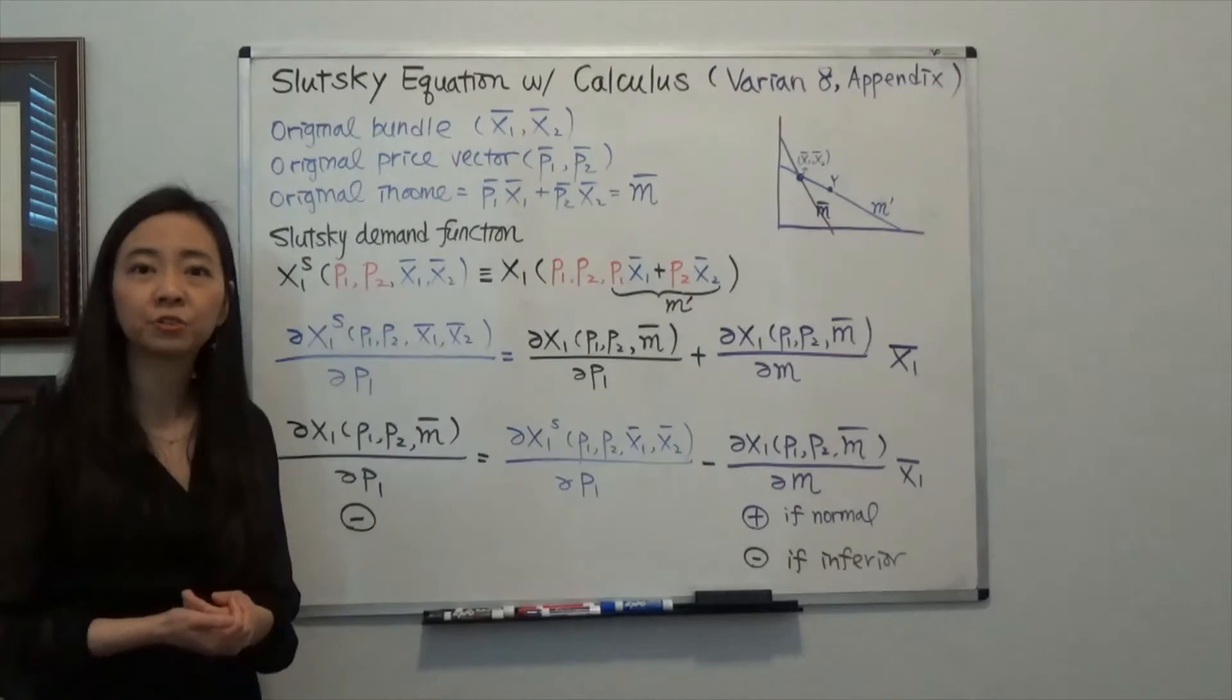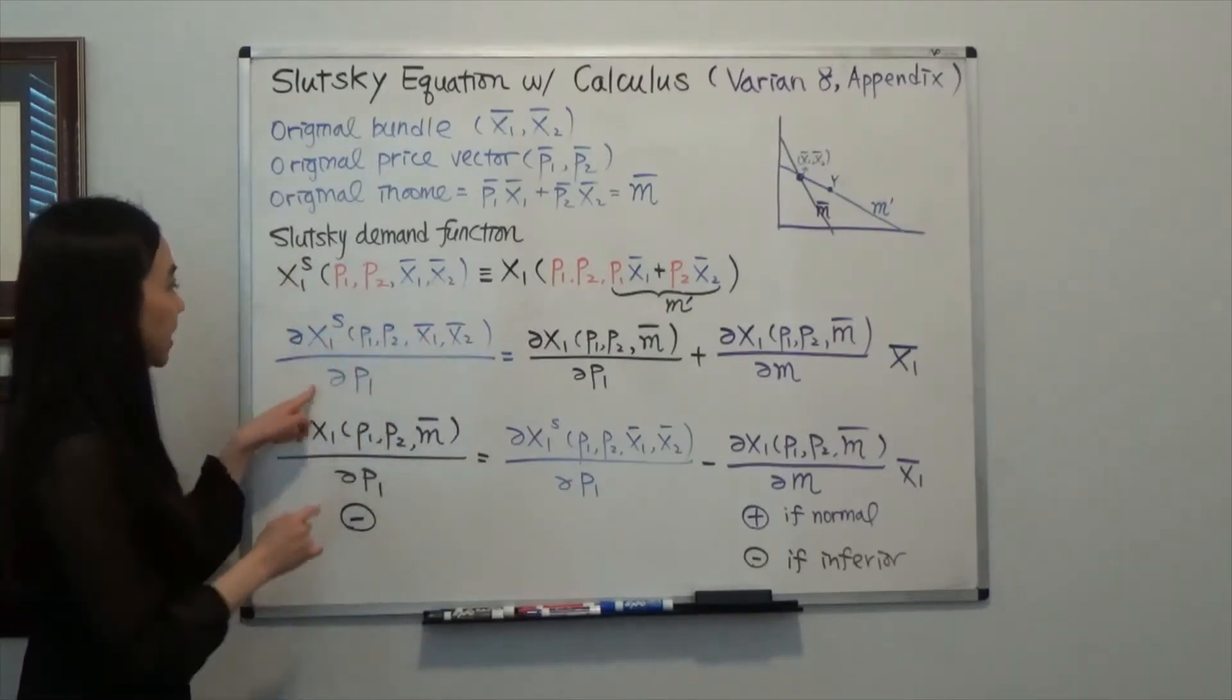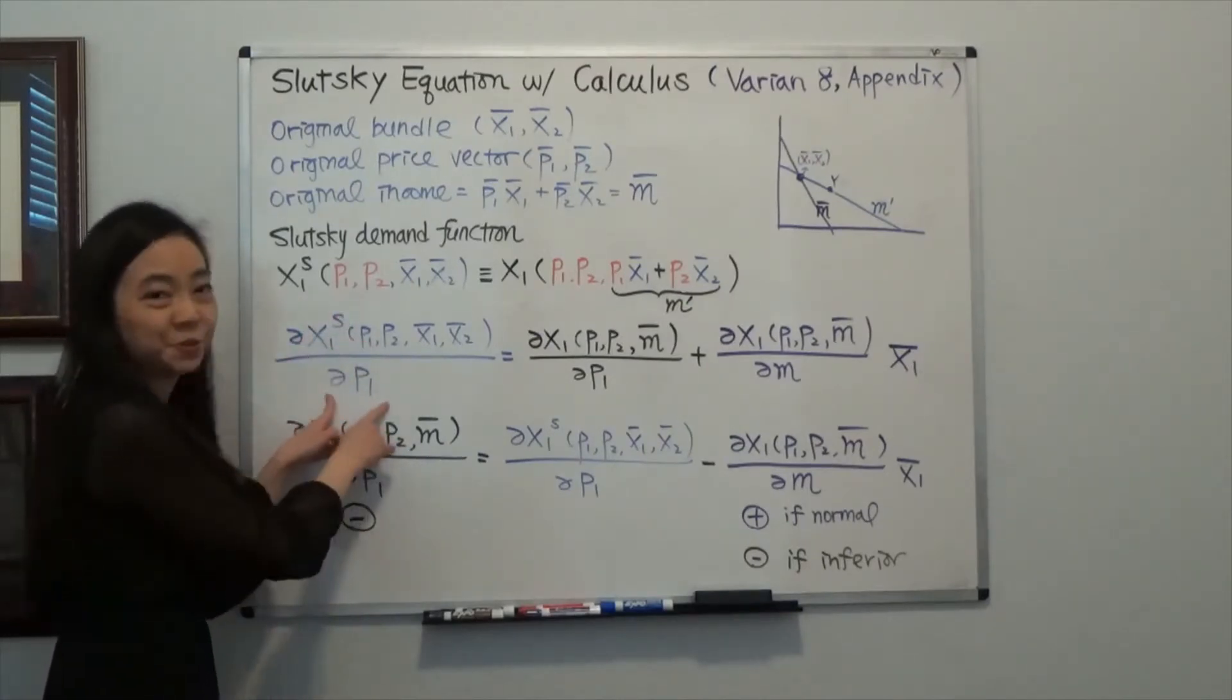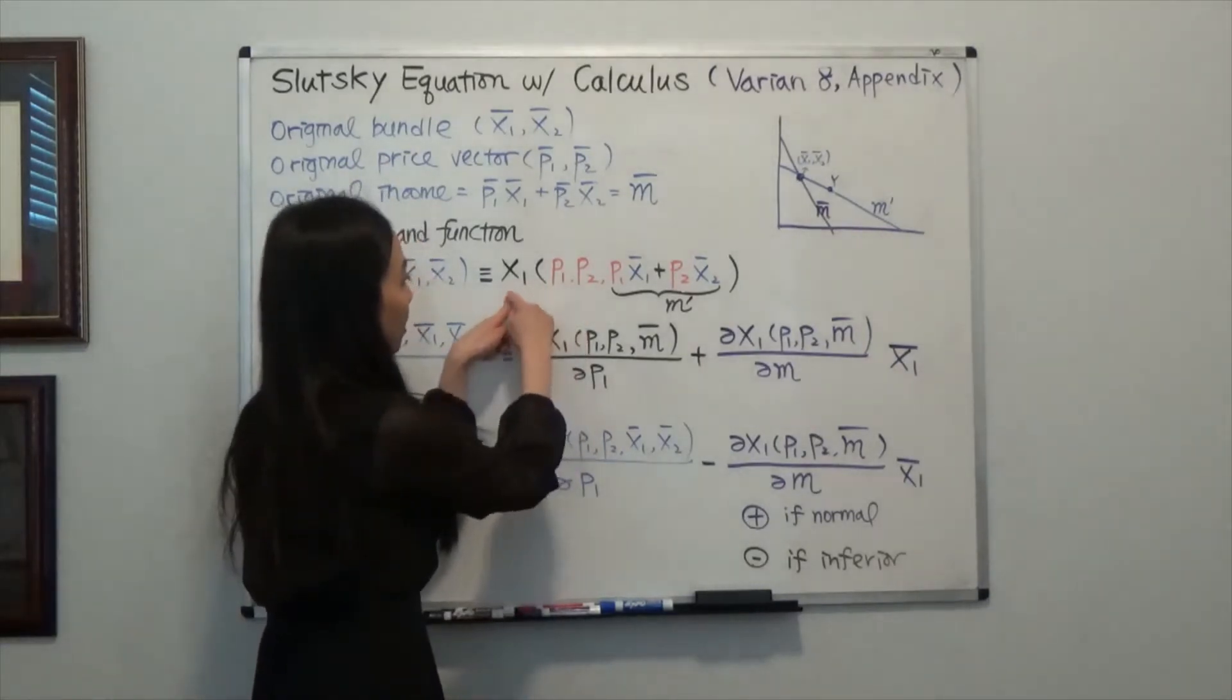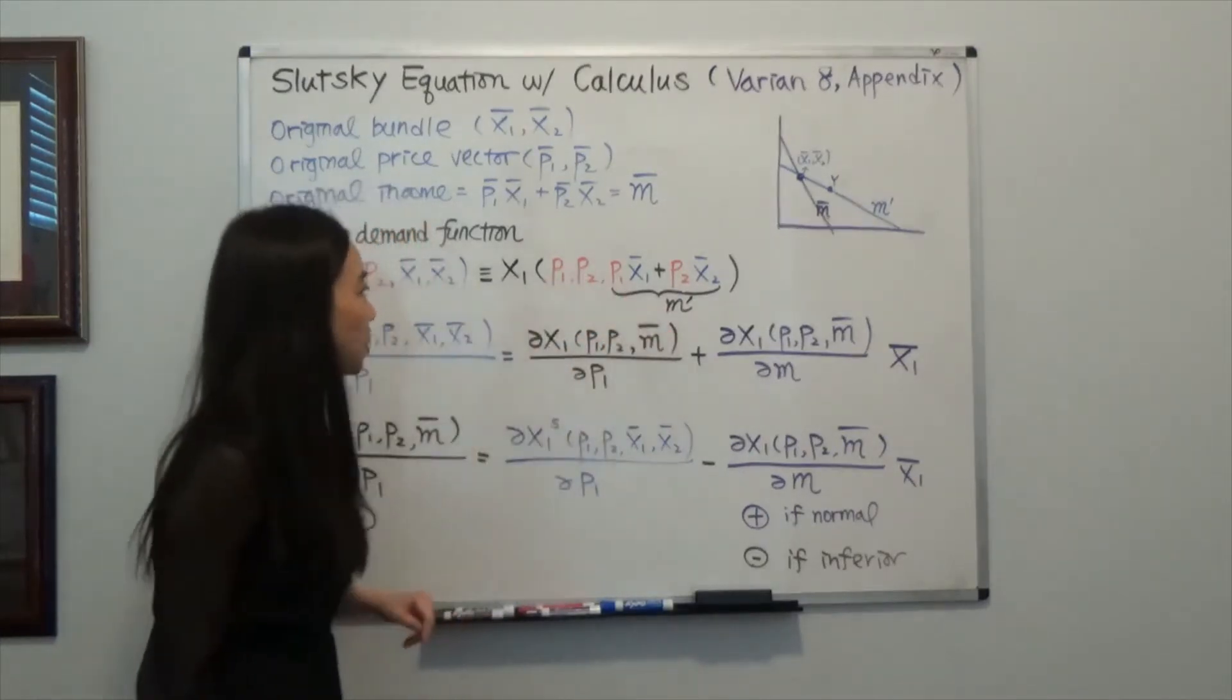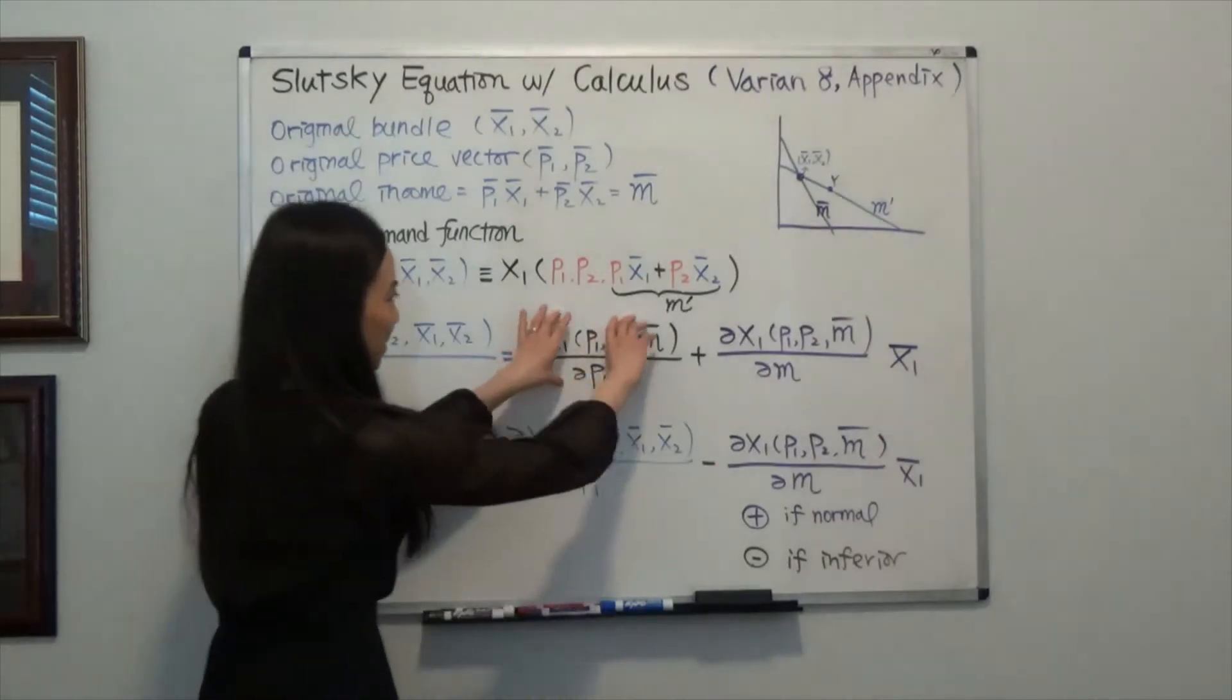And I'm going to take the derivative, a partial derivative with respect to p1 on both sides. So on the left-hand side, I take a derivative with respect to the Slutsky demand function. So that will be ∂x1s/∂p1. And on the right-hand side, you can see that we have an ordinary demand function with both p1 and my budget m in there. So when I take the partial derivative with respect to p1, I will have to use the chain rule here. That's the reason why you see two terms here.